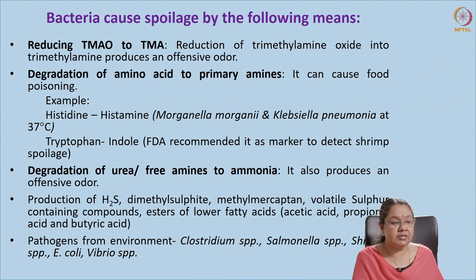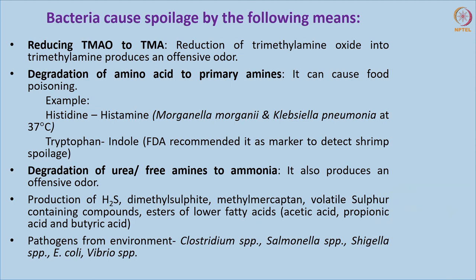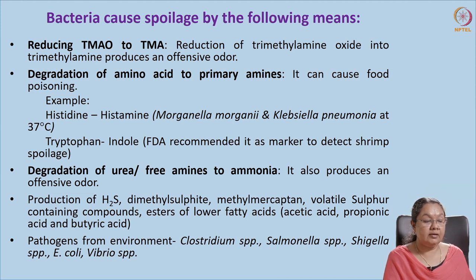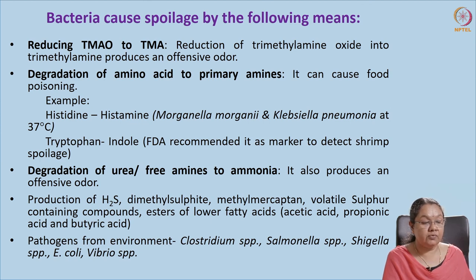Microbial spoilages include the conversion of TMAO — fish is rich in trimethylamine oxide and it is converted to trimethylamine, which gives an offensive odor. Second, we see degradation of proteins to amino acids and further degradation to primary amines, which may result in poisoning. One such example is histidine: histidine is converted to histamine by organisms like Morganella morganii or Klebsiella pneumoniae at 37°C. This is commonly seen in scombrid family fishes. This is similar to the histamine found in a mosquito bite, and people who are sensitive to histamine will develop serious disorders.